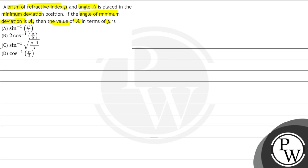So what is given in this question? We have a prism with refractive index mu. The angle of prism is A, and it is placed in minimum deviation position. The angle of minimum deviation is given as A. We need to find the value of A in terms of mu.